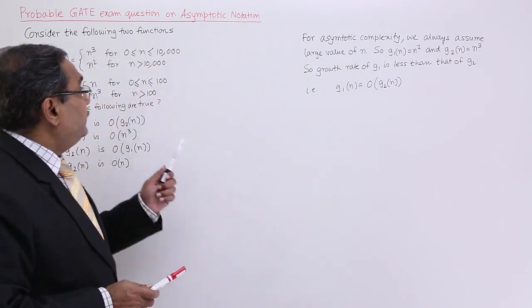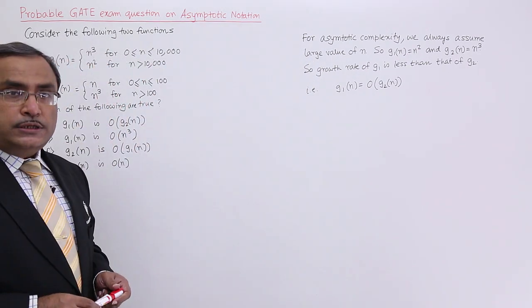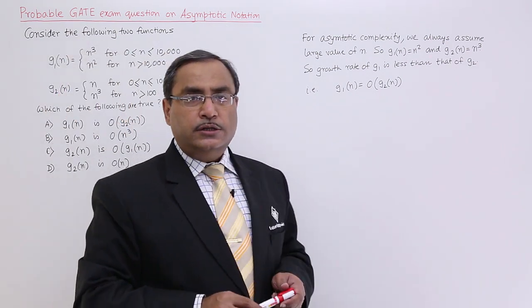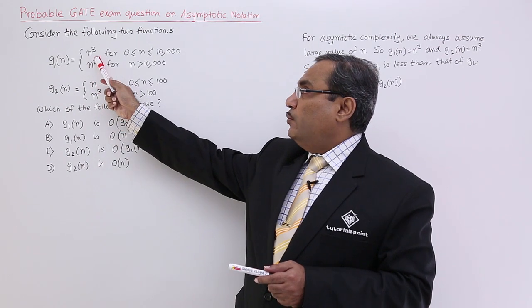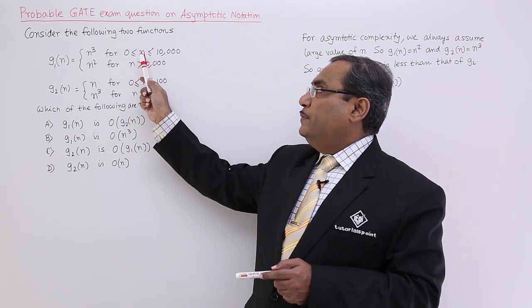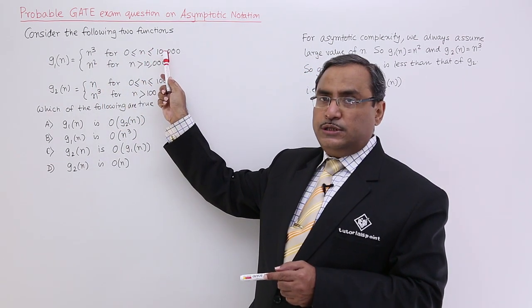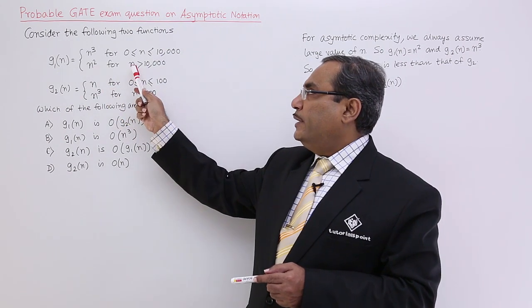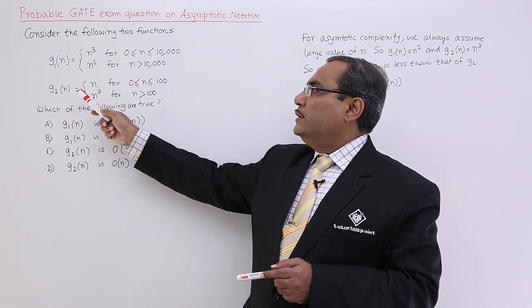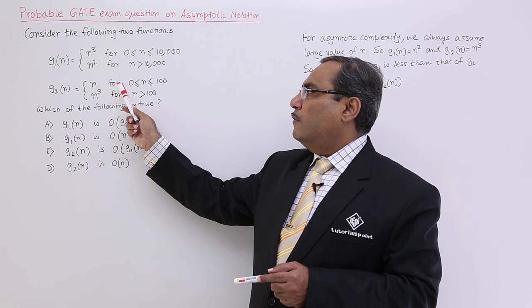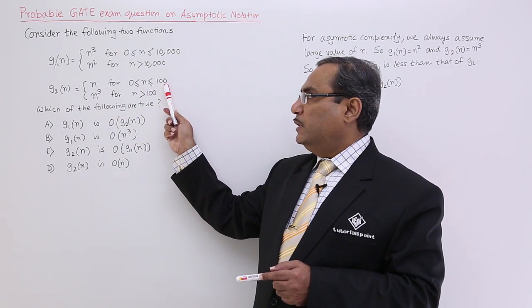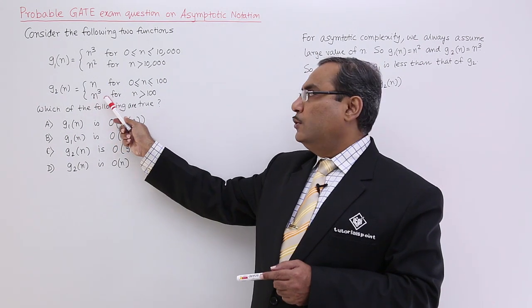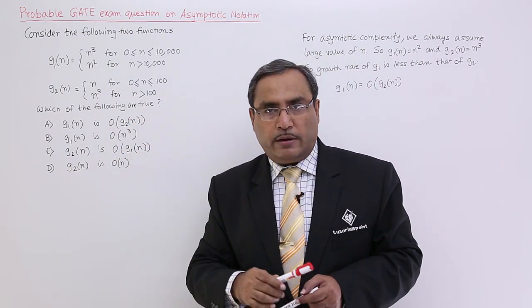Consider the following two functions. We have the function g1 of n and g2 of n. g1(n) is n³ when n is between 0 to 10,000 inclusive, and n² when n is greater than 10,000. g2(n) is n when n ranges from 0 to 10,000 inclusive, and n³ when the value of n is greater than 10,000.